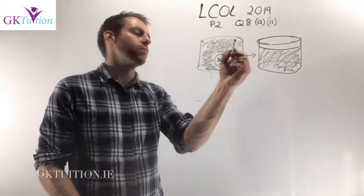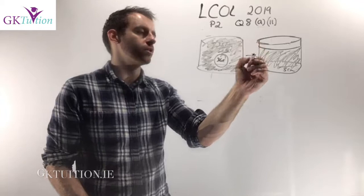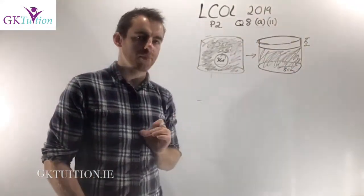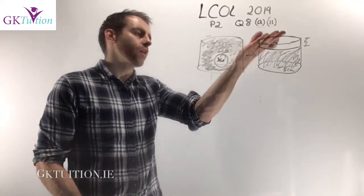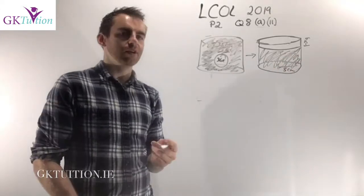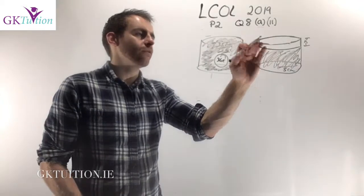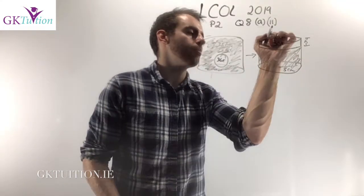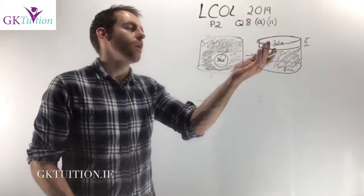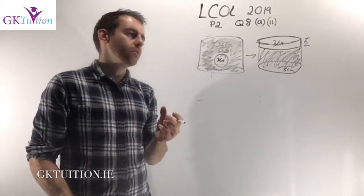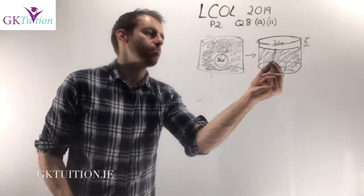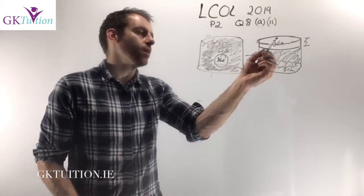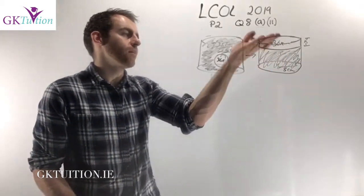If the water was to the very top initially, and we remove the sphere, the water level is going to drop. We need to work out the height of that drop. The water will drop down to a certain level, and the drop in water level will be equivalent to the volume of the sphere — 36π centimeters cubed of empty space at the top. That empty space at the top of the cylinder is itself in the shape of a cylinder.